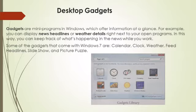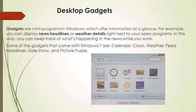Now let us learn about desktop gadgets. Gadgets are mini programs in Windows which offer information at a glance. For example, you can display news headlines or weather details right next to your open programs. In this way, you can keep track of what is happening in the news while you are working. Some of the gadgets that come with Windows 7 are Calendar, Clock, Weather, Feed Headlines, Slideshow and Picture Puzzles. In the image given below, you can see the various gadgets present on the computer.